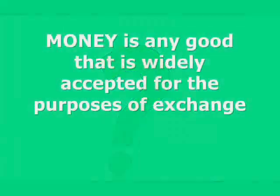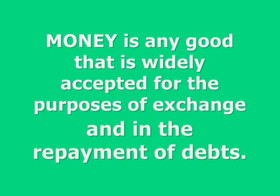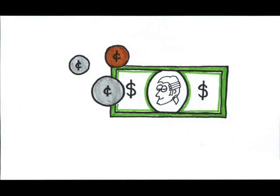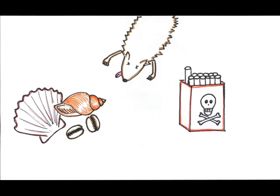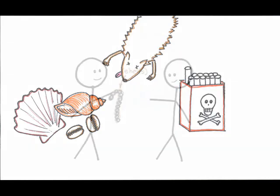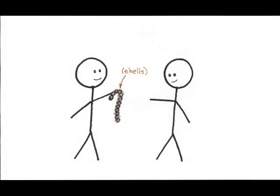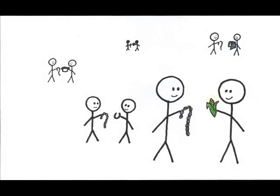By definition, money is any good that is widely accepted for the purposes of exchange and in the repayment of debts. Over the years, many items have been used as money — coins and paper, yes, but also shells, furs, and cigarettes. As long as the item is widely accepted for the purposes of exchange and in the repayment of debts, that item serves as money.